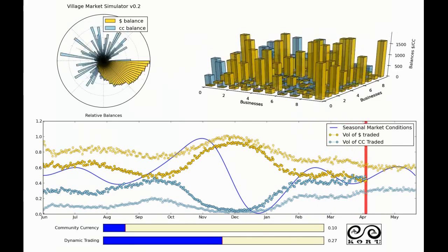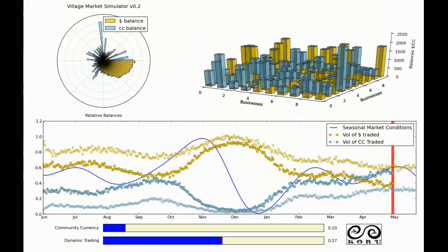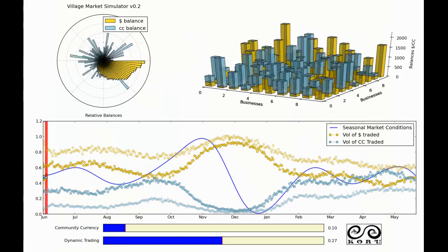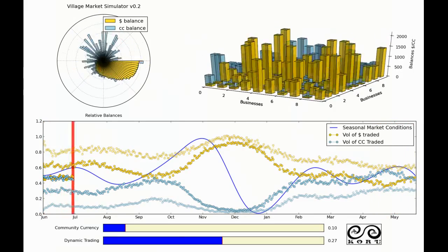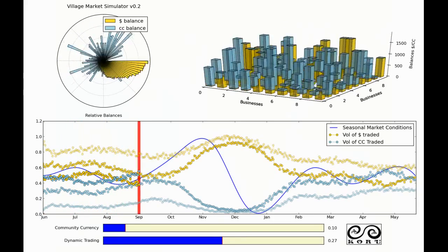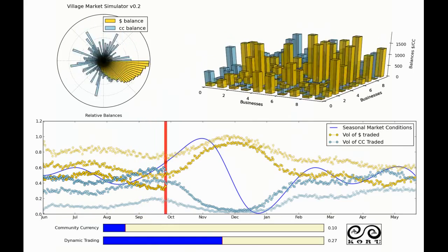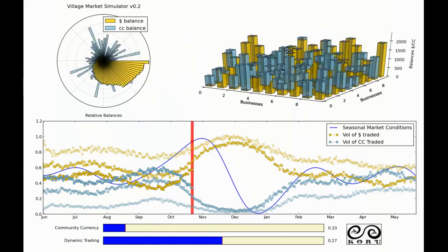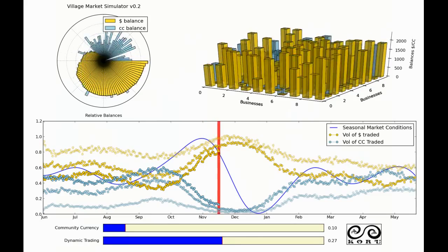And as time goes on there's less and less of the national currency in the system because it's leaking out. The complementary currency or community currency begins to really stabilize the community when it's in these periods where they're not able to export their goods or services.